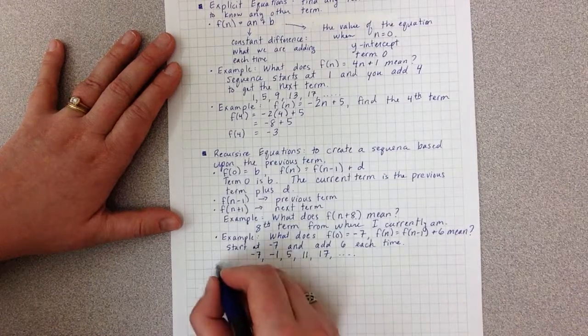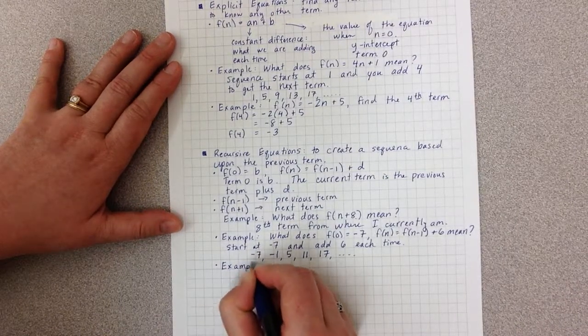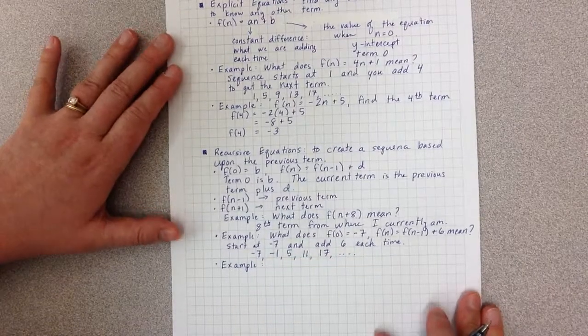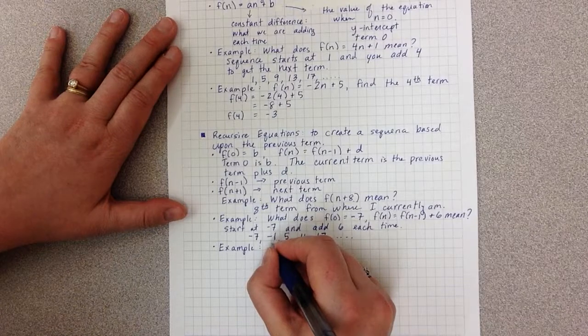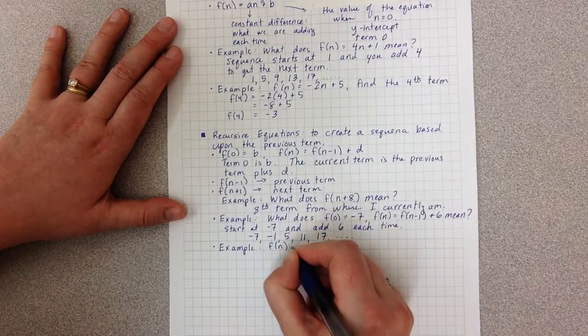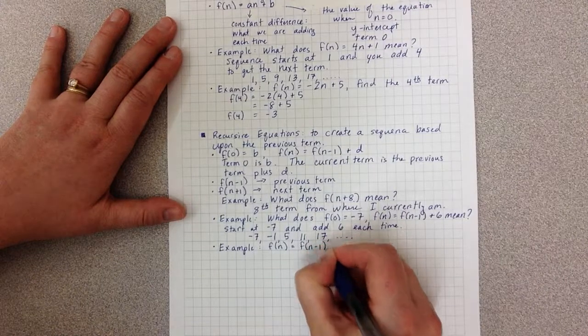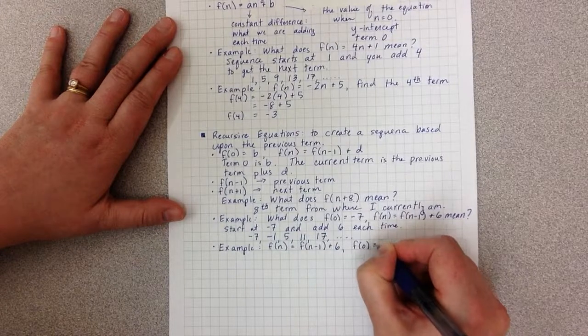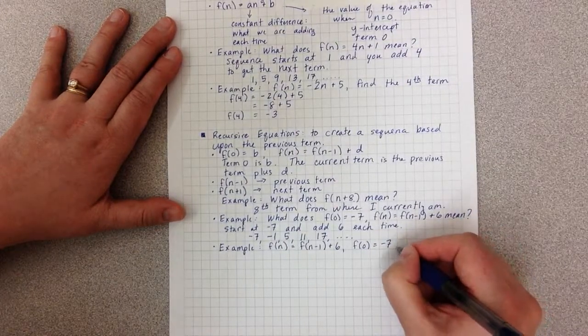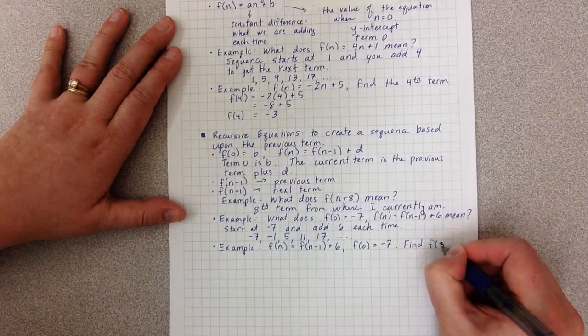Now, the catch with this is that if I do an example very similar to one that I did at the end of the explicit equation, and I say we have f(n) equals f(n minus 1) plus 6 where f(0) equals negative 7, and I say find f(3).